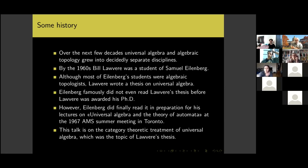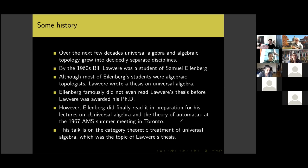Eilenberg did finally read the thesis in preparation for his lectures on universal algebra and the theory of automata at the 1967 AMS summer meeting in Toronto. There are also computer science applications of these things, recognized quite early on, but I won't get into those today. This talk is on the category-theoretic treatment of universal algebra, which was the topic of Lawvere's thesis, and the algebraic theories appearing in that treatment are now referred to as Lawvere theories.